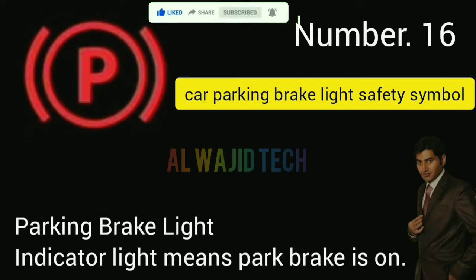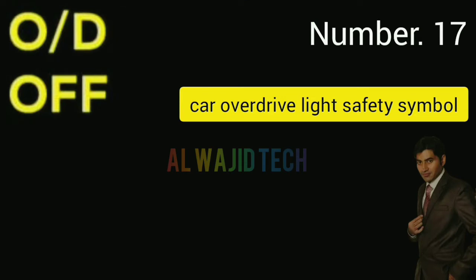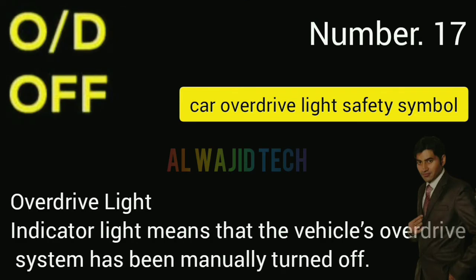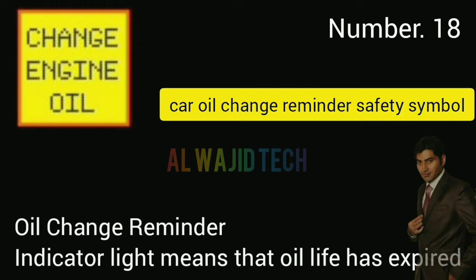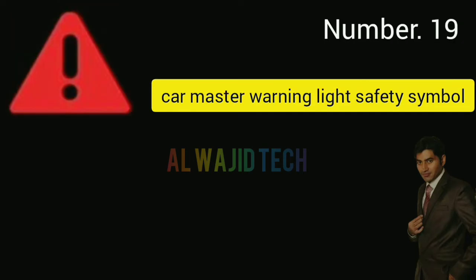Number sixteen: Car parking brake light. The parking brake light indicator means the park brake is on. Number seventeen: Car overdrive light. The overdrive light indicator means that the vehicle's overdrive system has been manually turned off. Number eighteen: Oil change reminder. The oil change reminder indicator means that oil life has expired.